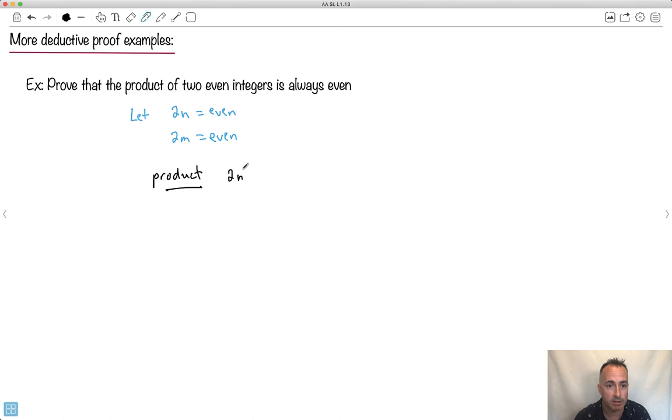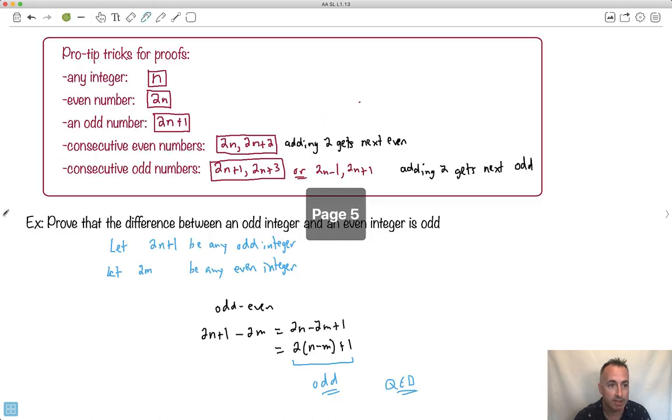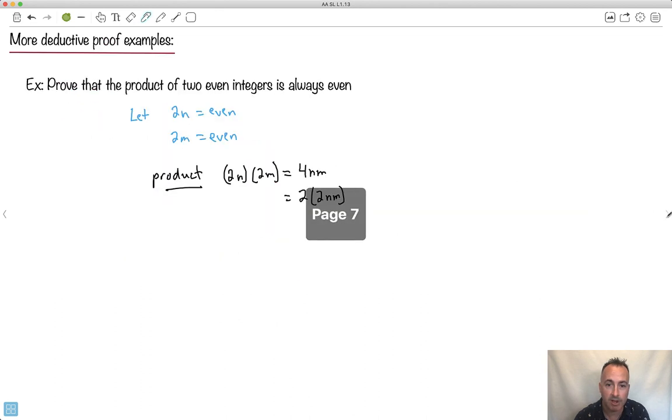Product just means I have 2n times 2m. What do I get then? Well, I get 4mn. This is like saying it's 2 times 2nm. The reason I'm separating it is because I'm trying to see this one right here. Remember what an even number is. An even number is just 2 times something. Look, I've got an even number because 2 times something like that, this right here will be even. This whole answer will be even because it's 2 times something. I've done it.